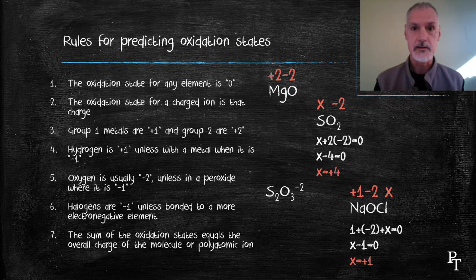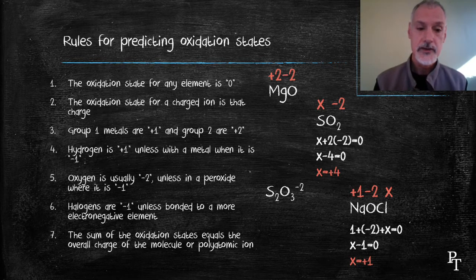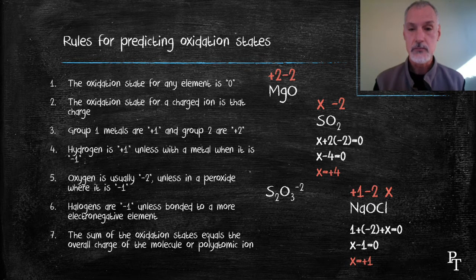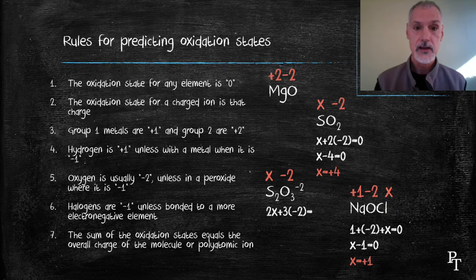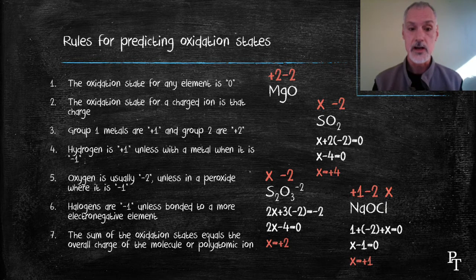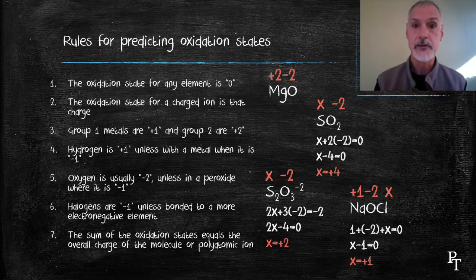Sodium thiosulfate ion has this particular formula. In this one, again, I'll let it be x and minus two for the oxygen, and set up an algebraic expression. Notice, though, it's 2x in this case, because I have two sulfurs. And when I solve for x, I get the charge or oxidation state of the sulfur as being plus two.